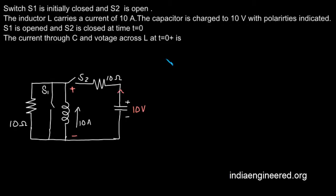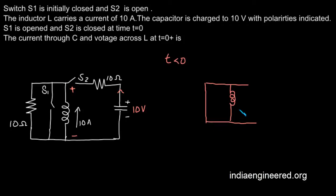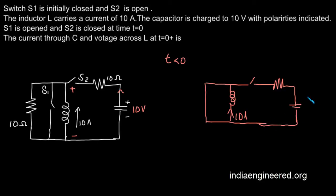We will draw the circuit to make it clear. For t less than 0, it is given that switch S1 is closed. That means we have S1 closed, so we can remove the resistance. We have the inductor which carries a current of 10 amperes. We have switch S2 which is open, along with the resistance and the capacitor. This is the case for t less than 0.